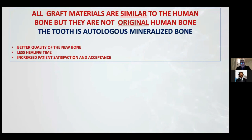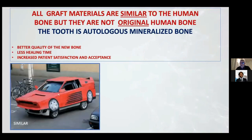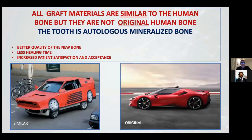All graft materials are similar to human bone, but they are not original human bone. We use the tooth because the tooth is original autologous mineralized material. The only difference between bone and dentine is the quantity of mineralization. We have better quality of new bone in shorter time, and every patient would like to use their own part to make a regeneration.